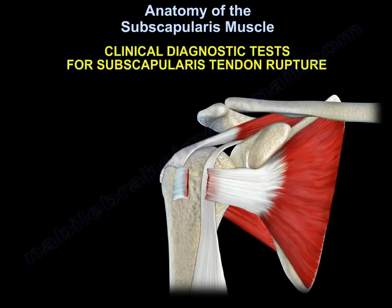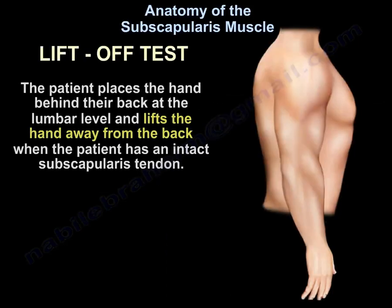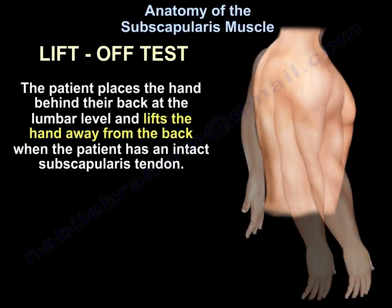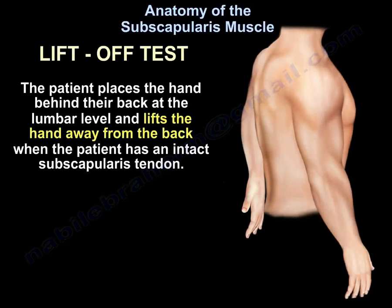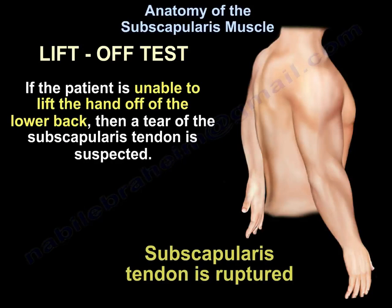What are the clinical diagnostic tests for subscapularis tendon rupture? The lift-off test: the patient places the hand behind their back at the lumbar level and lifts the hand away from the back when the subscapularis tendon is intact. If the patient is unable to lift the hand off the lower back, then a tear of the subscapularis tendon is suspected.